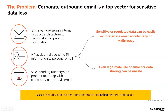There are different scenarios under which data loss can happen from an email. It could be an engineer forwarding an internal product architecture to a personal email — the distinction between personal and corporate is critical. It could be an HR person accidentally sending personally identifiable information to unauthorized people. Or a salesperson sending an unencrypted product roadmap when file-based encryption and authorized sharing based on RBAC and least privilege should apply.